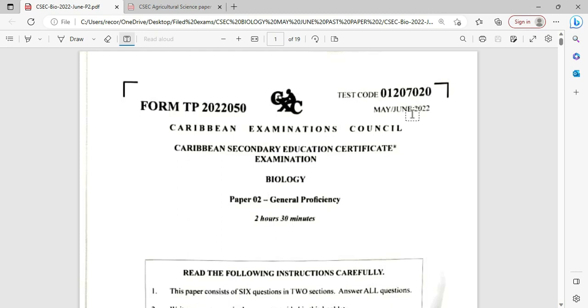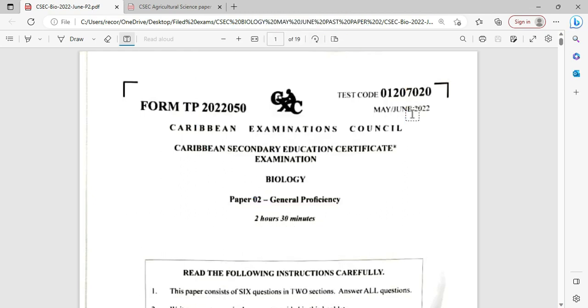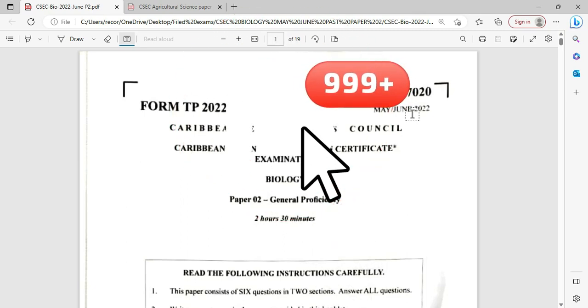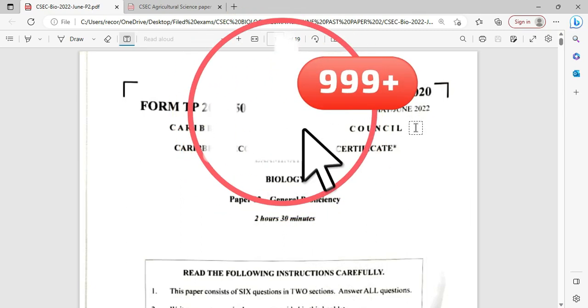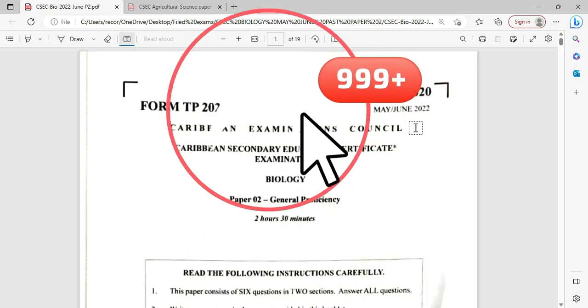Welcome to CSEC Biology TCP. I am Mr. Wilson from the TCP Academy. Today we are looking at the May-June 2022 biology paper. This paper was actually done in July instead of May-June in the year 2022.